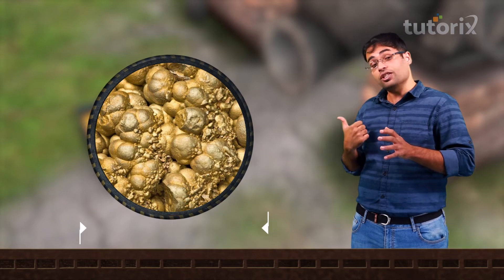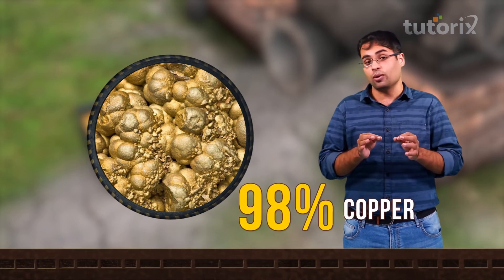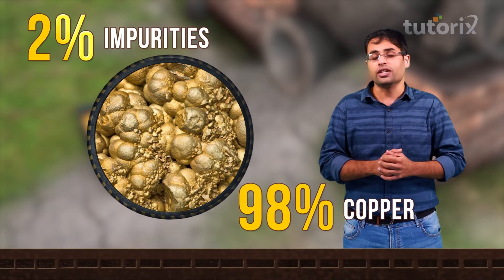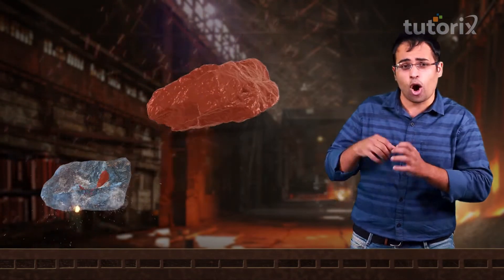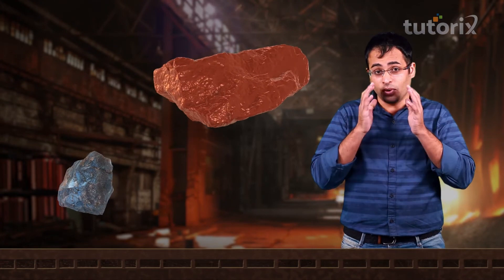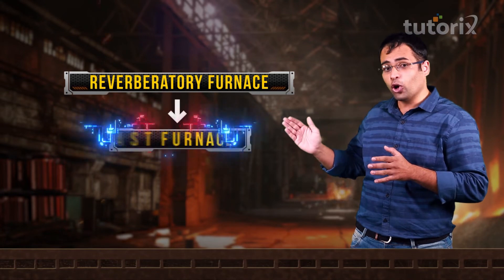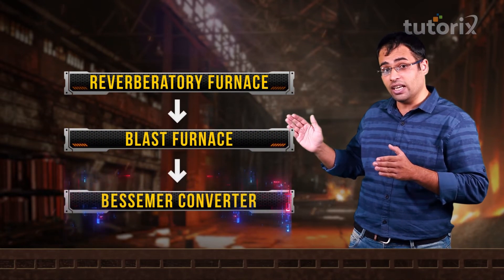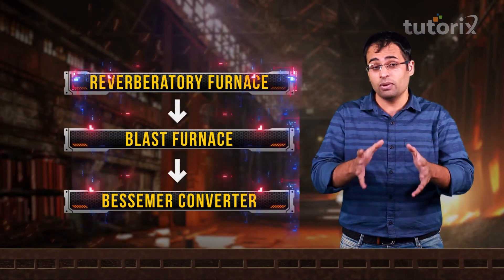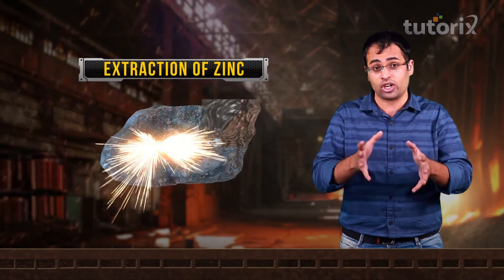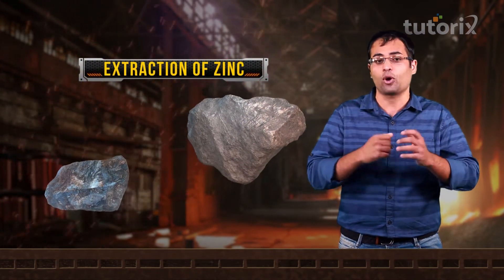Blister copper is 98% pure along with 2% impurities. So in today's class, we learned how to extract copper from its ore. We did this extraction by heating copper ore in a reverberatory furnace, followed by a blast furnace and finally in a Bessemer converter. In the next class, we will apply similar principles of extraction to the extraction of zinc from its ore.